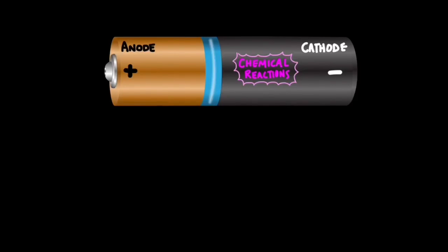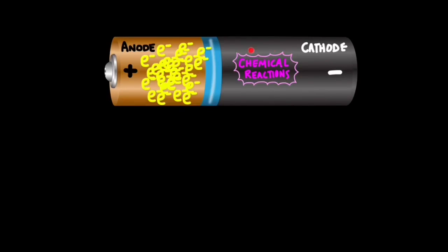What happens in a battery is that there are chemical reactions that occur which force electrons towards the anode. Electrons are negatively charged and they don't like being near each other — they will want to space themselves out. But these chemical reactions prevent that from happening so they continue to bunch up. And as long as these chemical reactions continue to occur you'll get this bunching up. The problem is these electrons can't go back through the cell because of these chemical reactions.